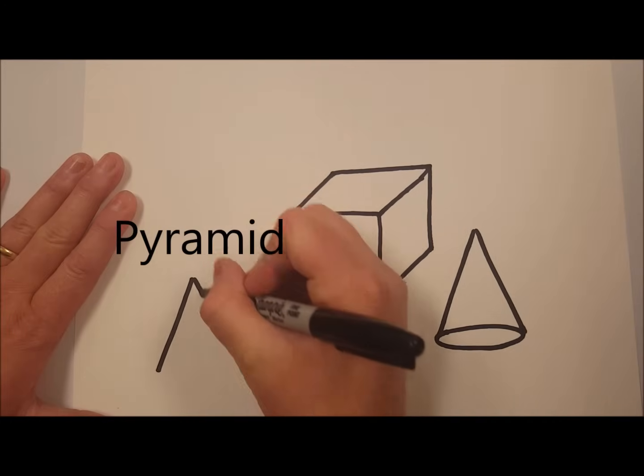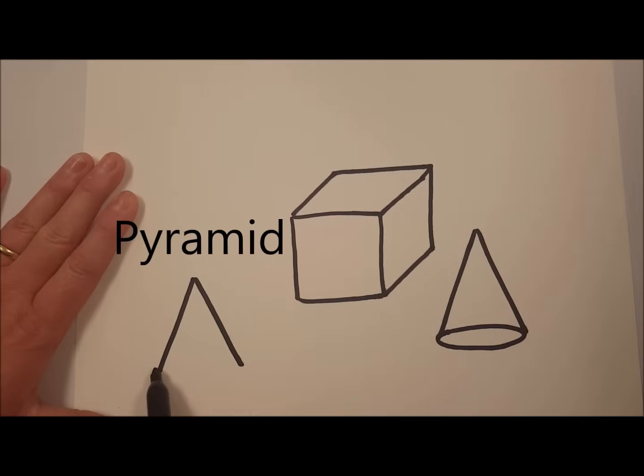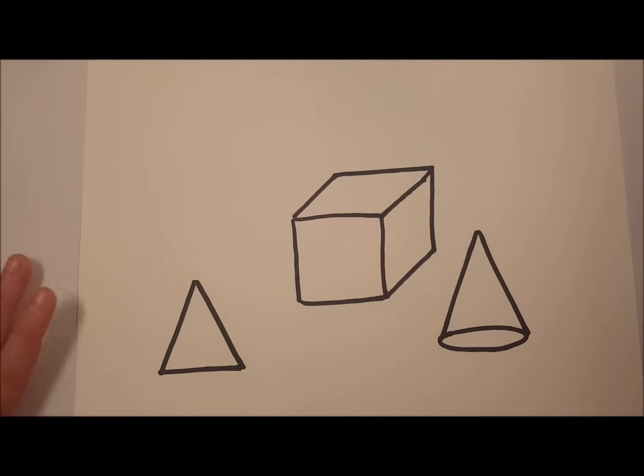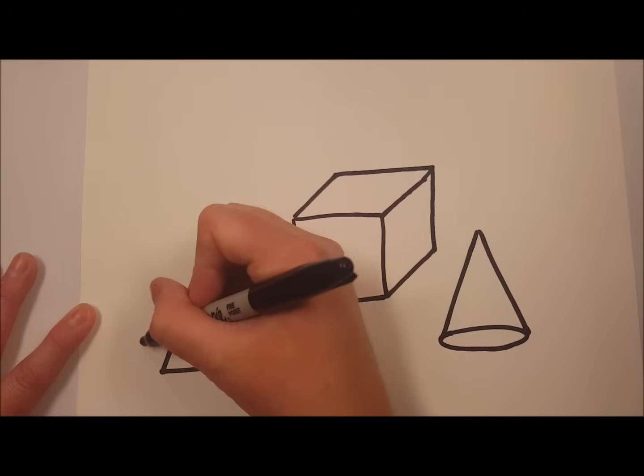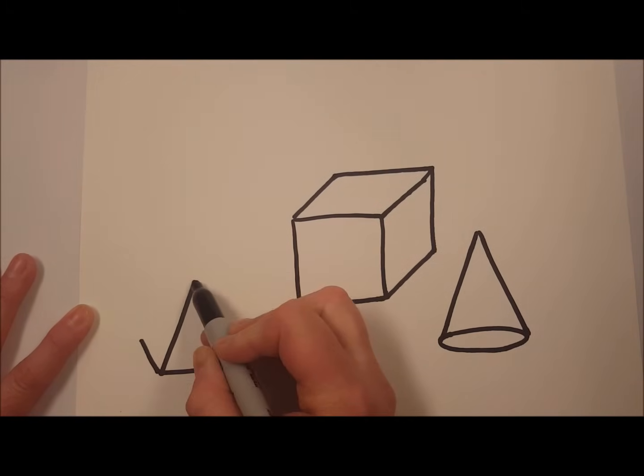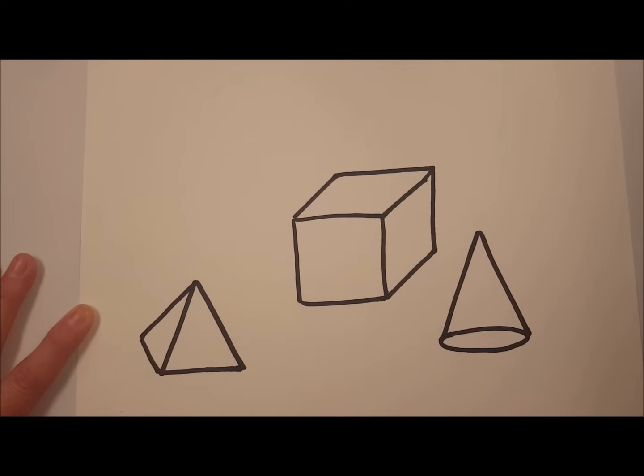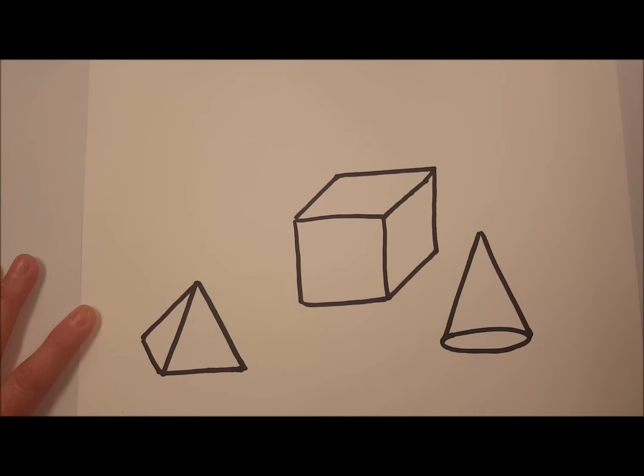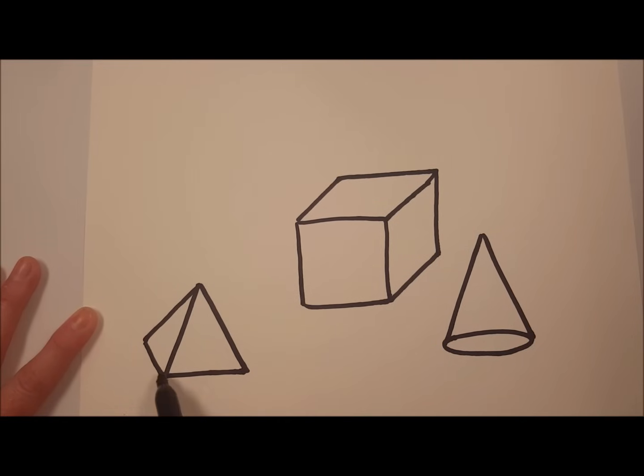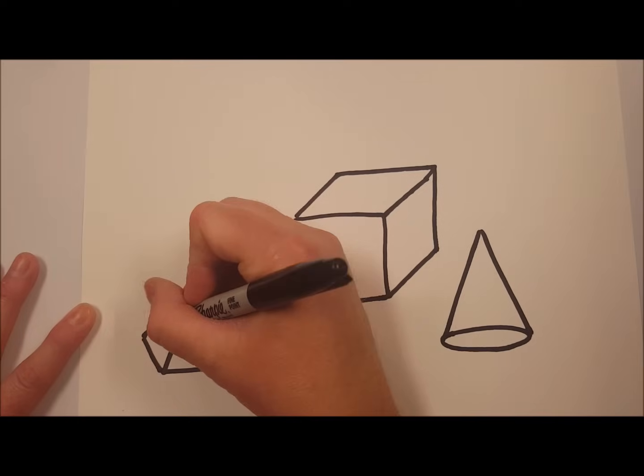A pyramid also starts out with a triangle, a flat shape or a plane shape. Then you add a diagonal and a diagonal that connects it. It's a pyramid. Now if you were to draw bricks on this, the bricks would follow the diagonal on this side.